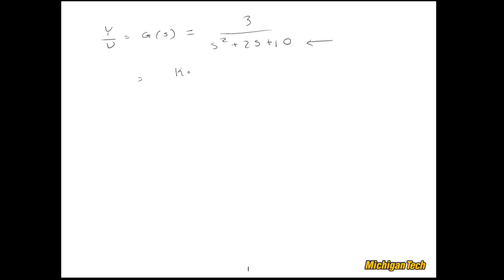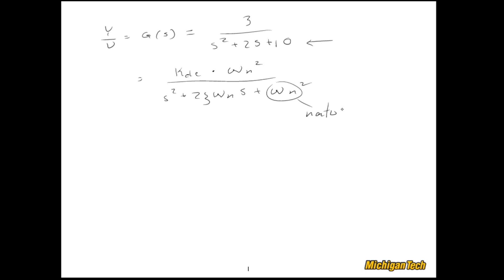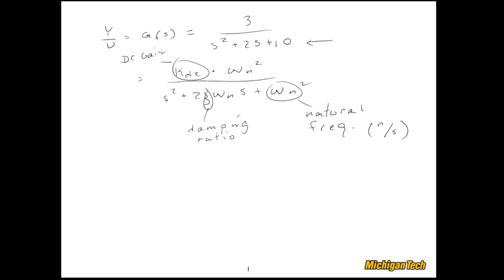We can write this in a general form. We'll have some DC gain times a quantity ωn squared, and then the denominator written as s squared plus 2ζωn·s plus ωn squared. So ωn is the natural frequency — you've probably seen that before, maybe in a vibrations course — and that has units of radians per second. And ζ is the damping ratio, which is unitless. And then we have the DC gain, which we'll denote as kdc.